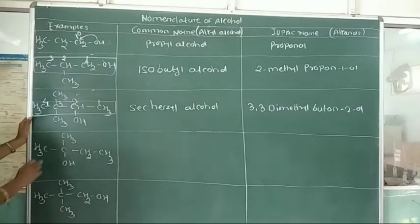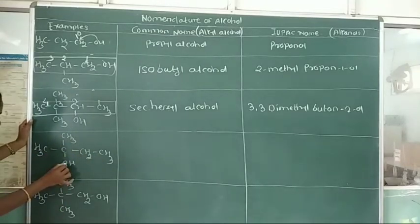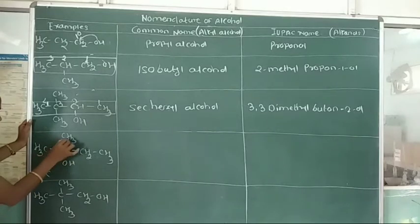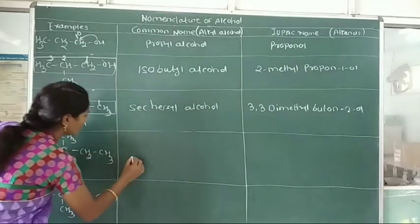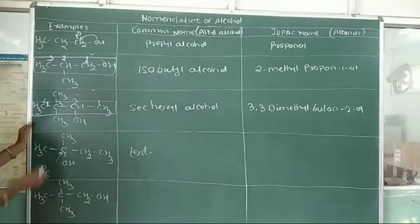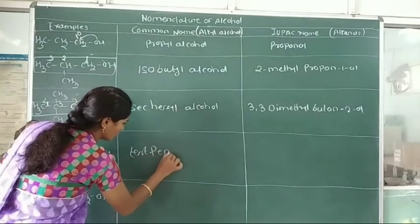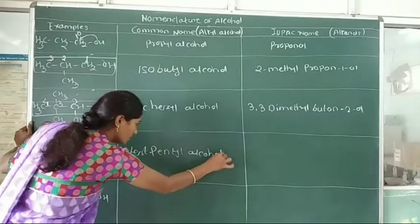Next example: CH3C(CH3)(CH2CH3) with OH. Here the hydroxy group is attached to a tertiary carbon atom — this is a tertiary carbon atom because this carbon is attached to 3 other carbon groups. In the common system, we use the prefix 'tertiary'. With 1, 2, 3, 4, 5 carbon atoms, the common name is tertiary pentyl alcohol.